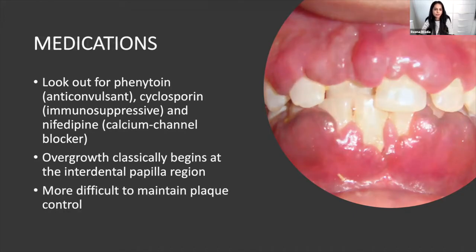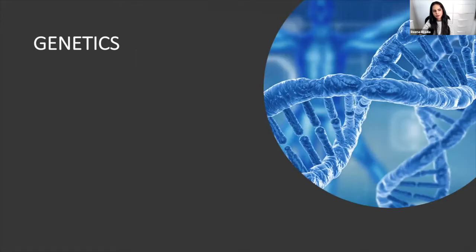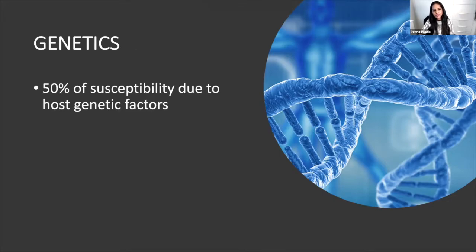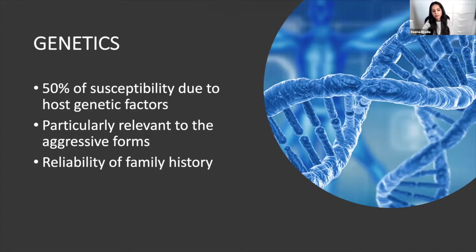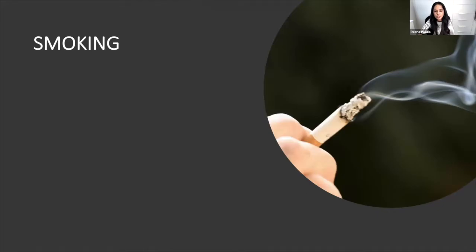Family history is important because 50% of the reason someone has perio is due to host genetic factors. Take family history with a pinch of salt though — if an 80-year-old lost their teeth, that's not necessarily a positive family history. But if a 35-year-old sibling is having periodontal surgery with no other risk factors, that is a positive family history.